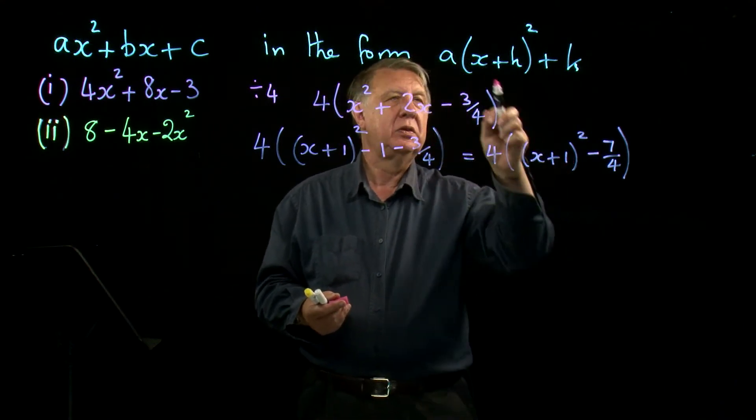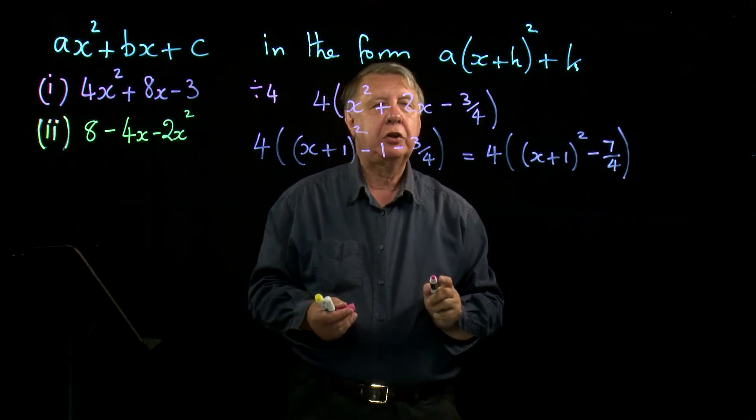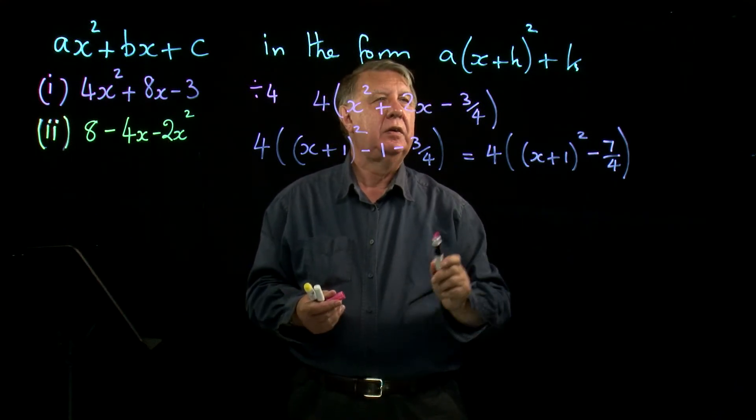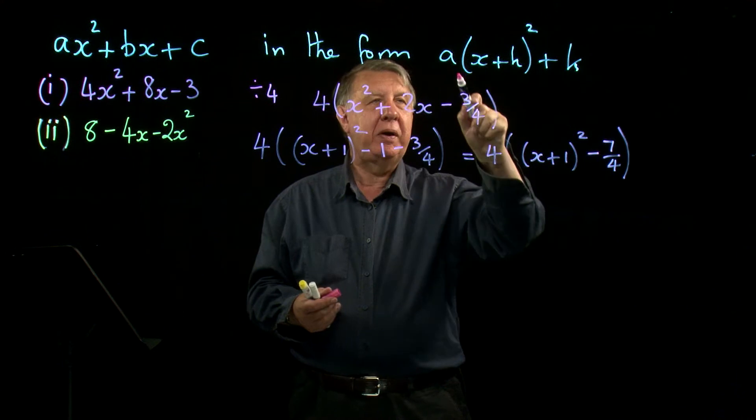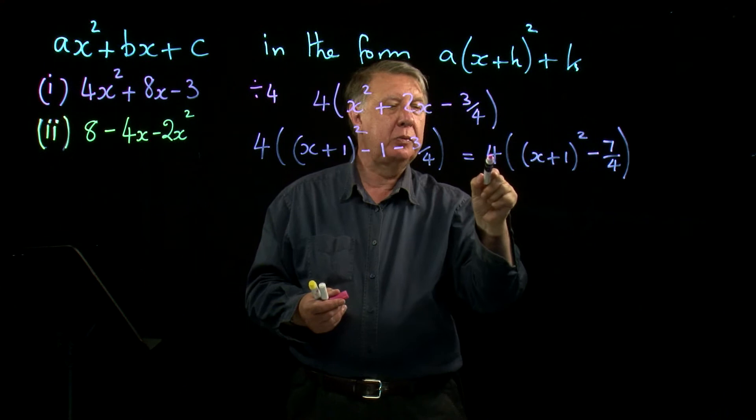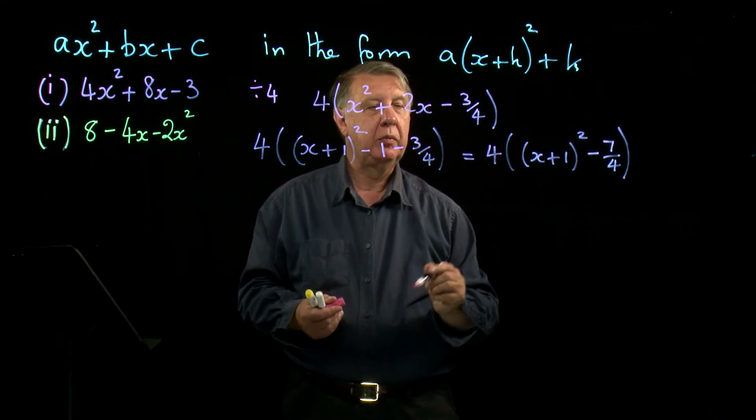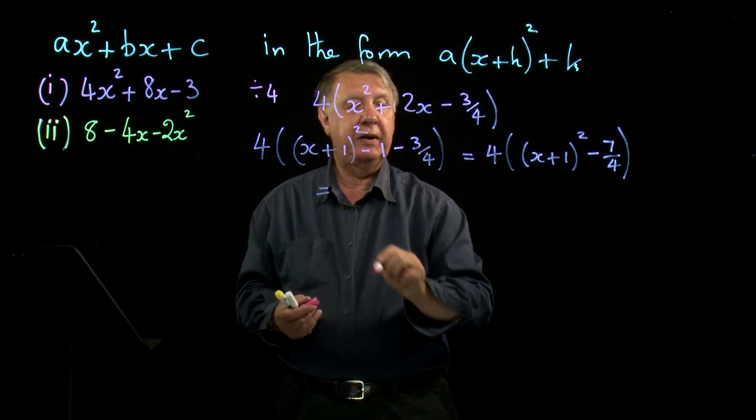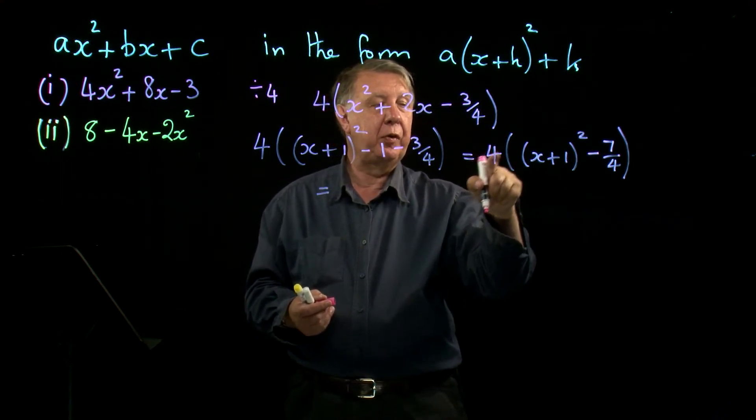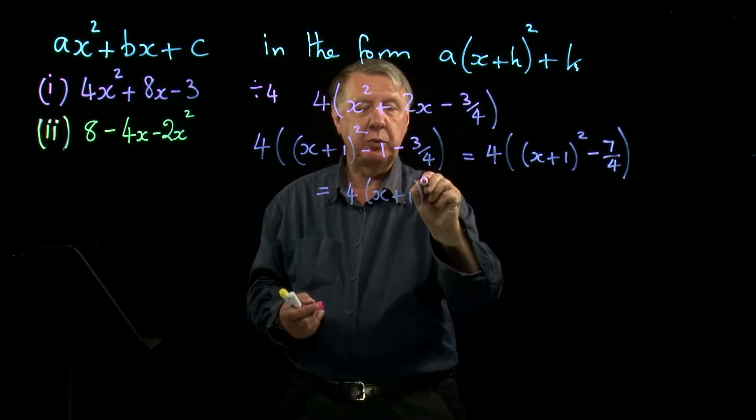Now you can worry about the in the form. If you look at that carefully, the a appears in front of the squared bracket. At the moment this four is in front of everything. I can get round that by putting the four with this squared bracket, which is x plus one squared.